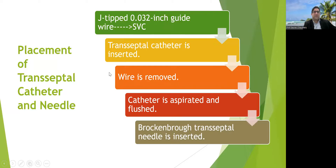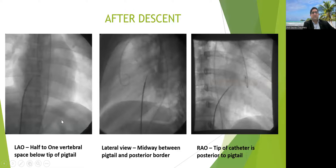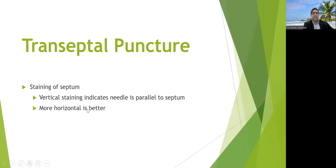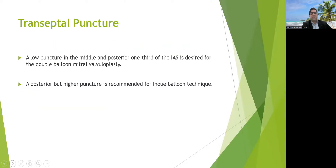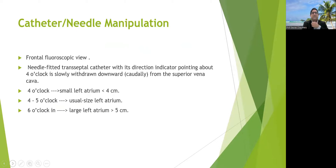For technique with JD wire: a 0.025-inch J-wire is placed in the SVC, then the transseptal catheter is inserted, the wire is removed, the catheter is aspirated, and the Brockenbrough septal needle is inserted. In AP view, the tip should be half to one vertebral space below the pigtail. In the lateral view it should be midway at the junction of two-thirds and one-third between the pigtail and the posterior border. In RAO, the catheter tip should be just posterior to the pigtail without reaching it. Some operators prefer staining the septum; vertical staining indicates the needle is parallel to the septum, so the needle may need reshaping with more angle — a more horizontal orientation is better. A low puncture in the middle and posterior one-third of the IAS is desired for double balloon mitral valvotomy, while a posterior but higher puncture is for Inoue balloon, and a high puncture is for valve-in-valve, TMVR, or MitraClip.